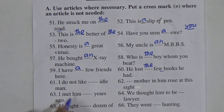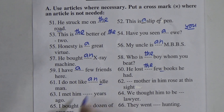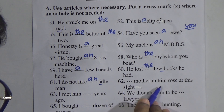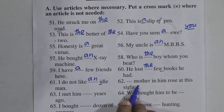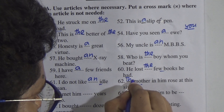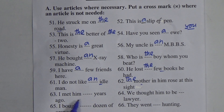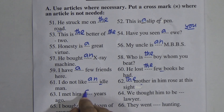Number 61: 'I do not like — idle man.' The word starts with vowel 'i', so we put 'an' — 'I do not like an idle man.' Number 62: '— mother in him rose at his sight.' This means the mother-like behavior or attitude in him rose — 'The mother in him rose at his sight.'